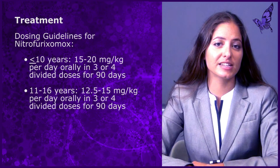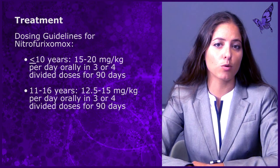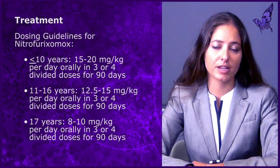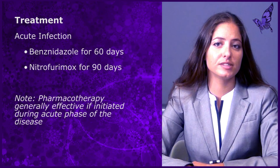For children aged 11 to 16 years, the nifurtimox dosing is 12.5 to 15 mg per kg per day orally in three or four divided doses for 90 days. For anyone aged 17 and older, the dose is 8 to 10 mg per kg per day orally in three or four divided doses for 90 days. Both of these agents are generally effective at eliminating the disease. They must be obtained through the CDC for use in the United States and should be avoided in patients with severe renal or hepatic dysfunction.